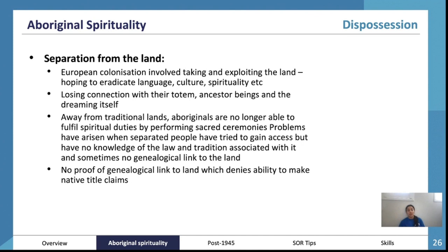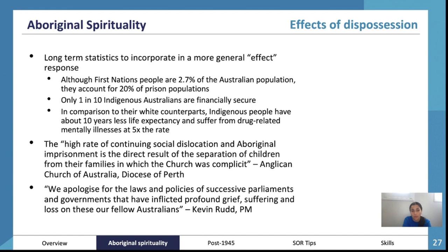Dispossession resulted from both protection and assimilation policies. Protection policies aimed to remove Aboriginal people from 'unsuitable environments' by detaining them in homes or missions. Assimilation policies took Aboriginal people — particularly those of mixed heritage — and assimilated them into white society so their Aboriginality could be forgotten. Separation from the land through European colonisation caused loss of connection with their totem, and away from traditional lands, Aboriginal people could no longer fulfil spiritual duties through sacred ceremonies.